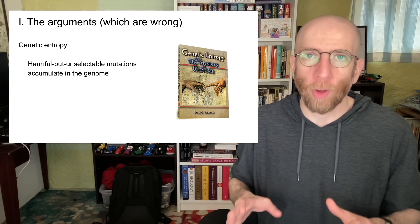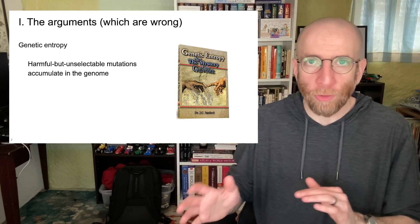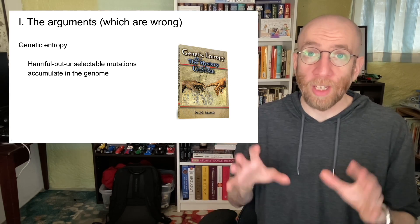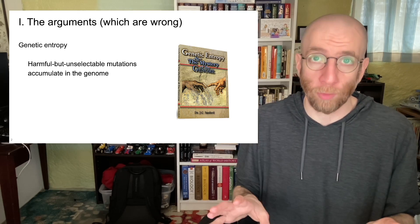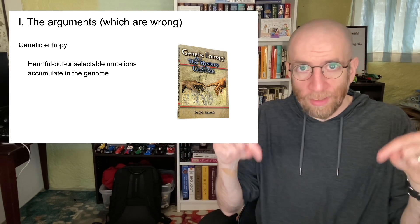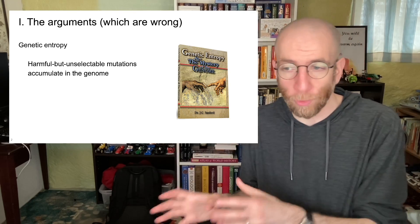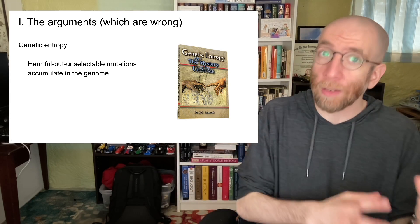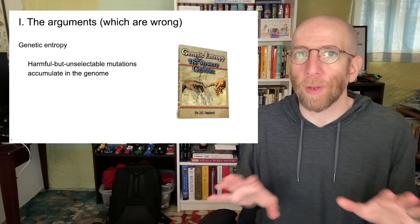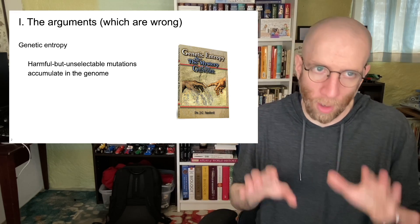Before we get into how these arguments are contradictory, I just want to take a moment to introduce each of them on their own terms. I want to be clear — each of these arguments is wrong for their own reasons. I've linked videos below from me and others showing why genetic entropy is wrong and why there actually is a lot of junk DNA in the human genome. But today is all about how these two arguments are incompatible with each other.